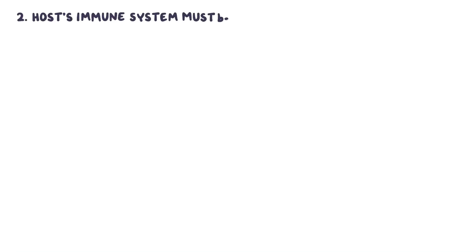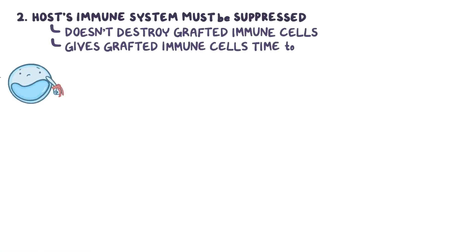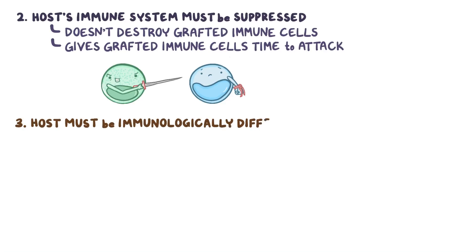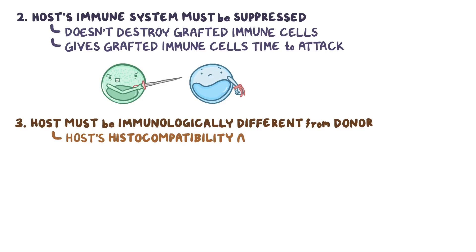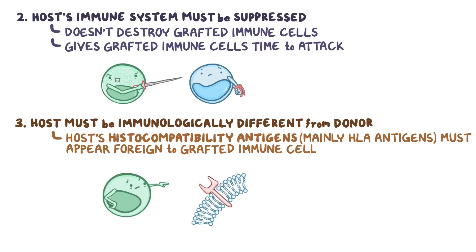The second element is that the host's immune system must be suppressed so that it doesn't destroy the grafted immune cells, giving the grafted immune cells enough time to mount an attack. And the final element is that the host must be immunologically different from the donor — in other words, the host's histocompatibility antigens, mainly the HLA antigens, must appear as foreign to the grafted immune cells.